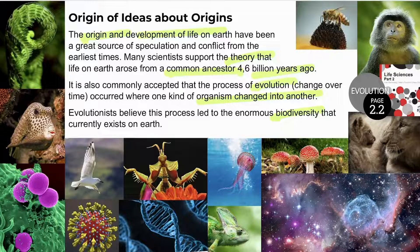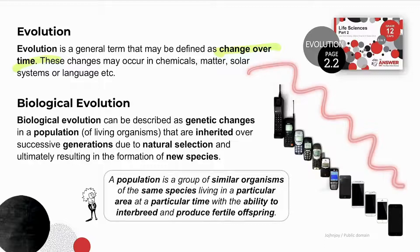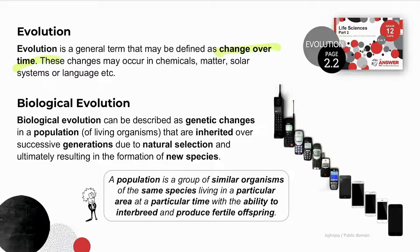We'll look at some definitions as an introduction to this topic. Evolution is described as change over time — whether in cell phones, skyscrapers, aeroplanes, cars, or fashion. Biological evolution, on the other hand, is change over time in living things. The definition includes six different things: biological evolution refers to genetic changes in a population that are inherited over generations due to natural selection and may eventually result in the formation of new species.